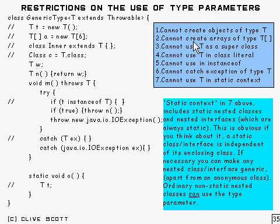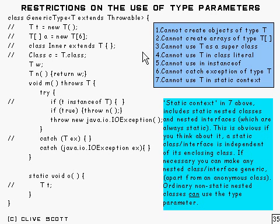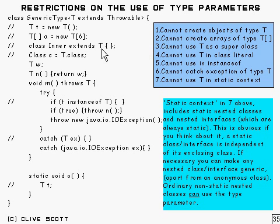Similarly, you can't create arrays of type T either, for the same reason. Next, you can't use T as a superclass, because if you had an inner class in here which extends T, you'd have a problem because the constructor for inner would want to call the superconstructor, and you don't know which one it is because you don't know what T is.